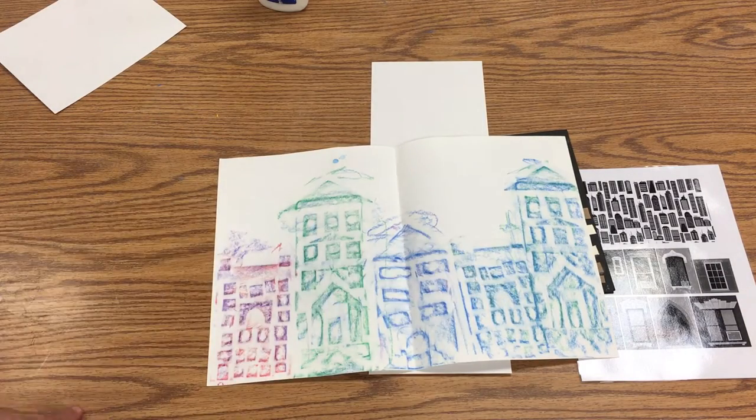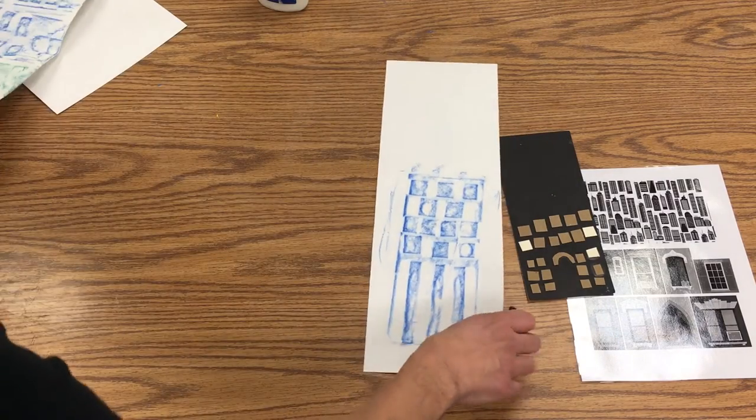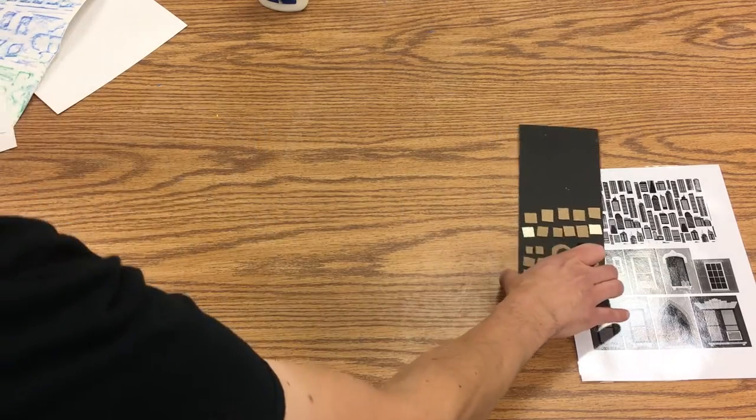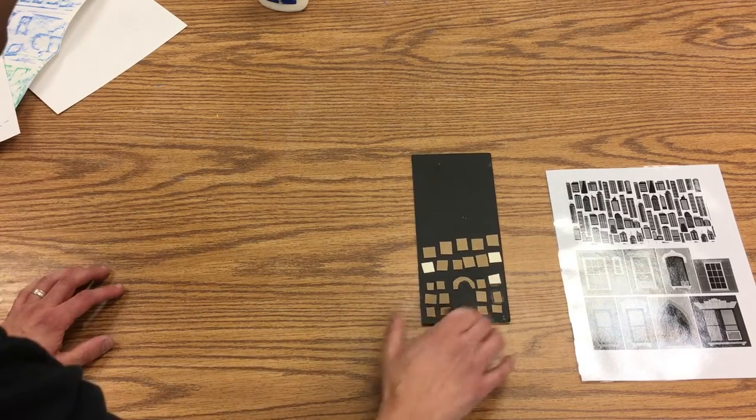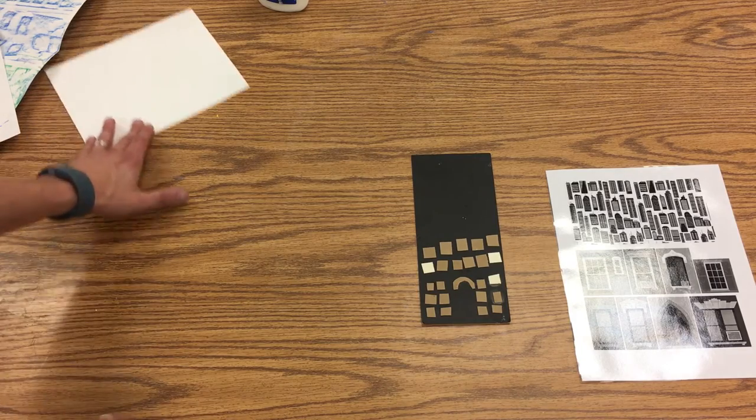So the way we're going to do this, and I've already started one here, is we're going to have a piece of thicker board and then you're going to have smaller pieces. They might be made from cereal box or something like that.